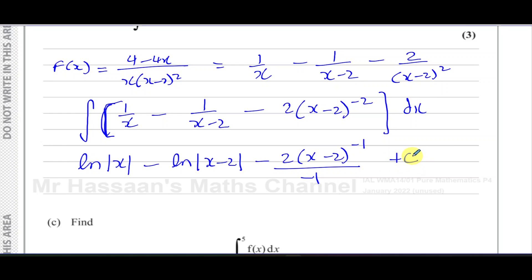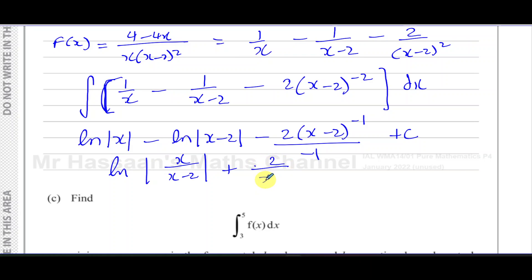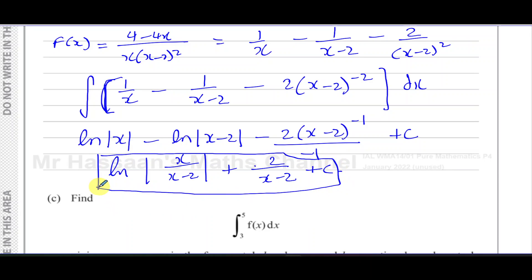Simplifying, we can write this as ln|x over (x minus 2)|, plus 2 over (x minus 2), plus C. Don't forget the plus C. And there we have the answer to part B.